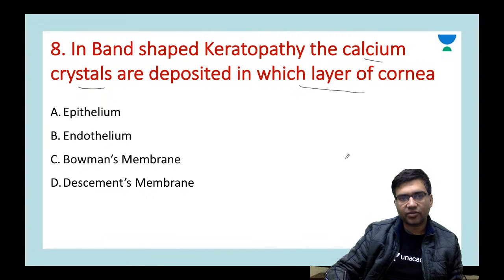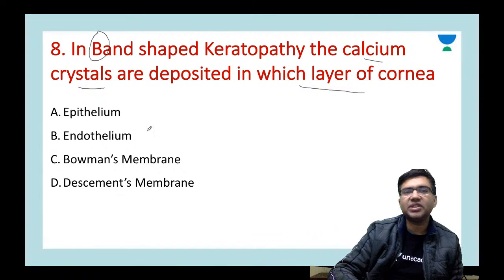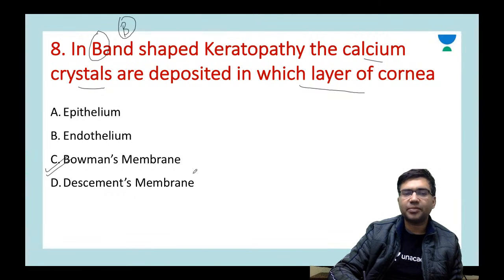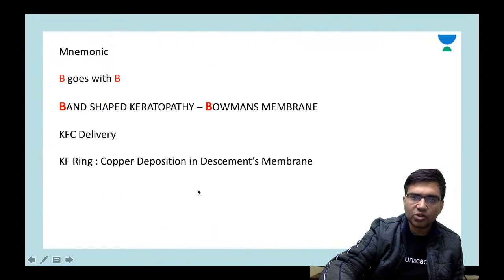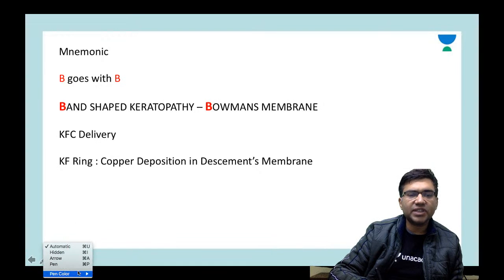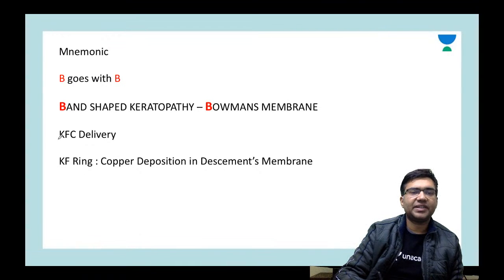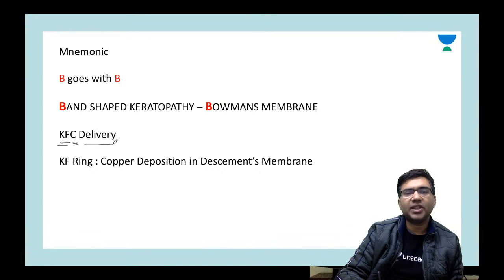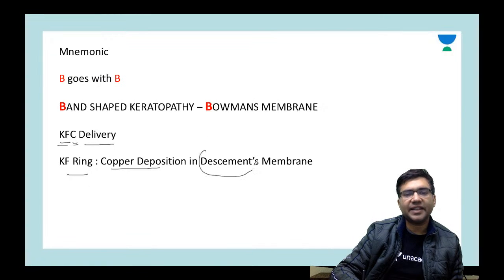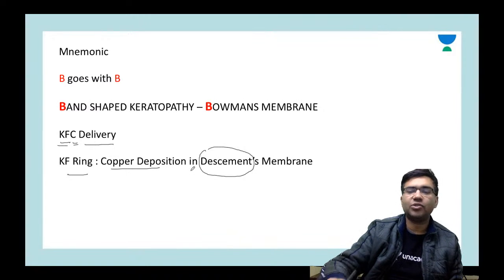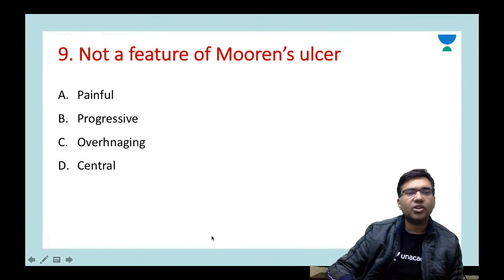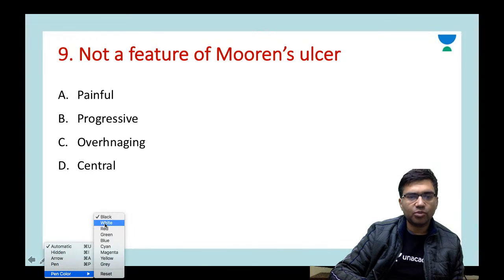In band-shaped keratopathy, calcium crystals are deposited in which layer? Remember 'B goes with B': band-shaped keratopathy has deposition in Bowman's membrane. Do not confuse it with the KF ring — for KF ring, remember the mnemonic 'KFC Delivery': KF ring is copper deposition in Descemet's membrane. This was also an INICT question this year.